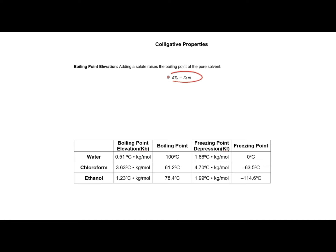Here is the equation we use to calculate how much the boiling point will change. Our KB is a constant for that solvent. Looking at the table at the bottom of the page, you can see we have KBs for three different solvents and they are all very different. We also need the concentration measured in molality.